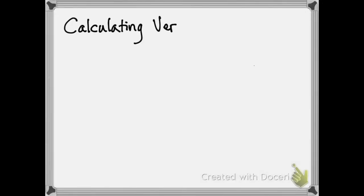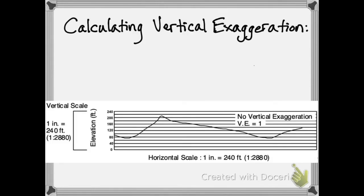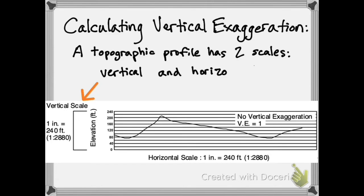This video is about calculating vertical exaggeration of a topographic profile. Every topographic profile has two scales: one that runs up the vertical side and one that runs across the horizontal side.